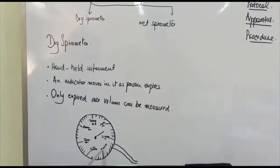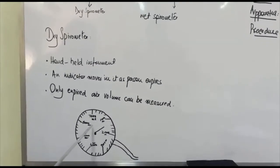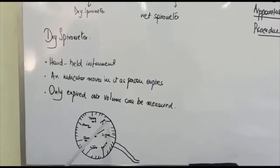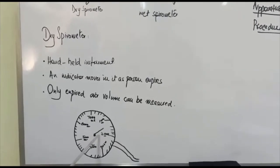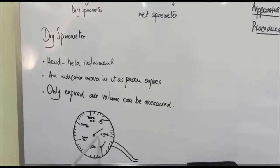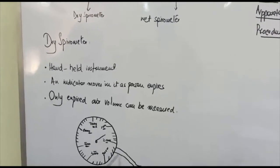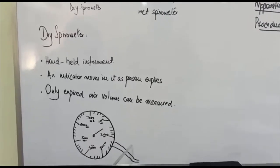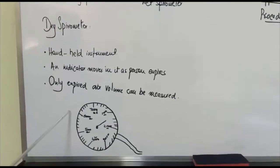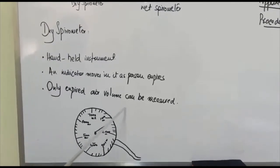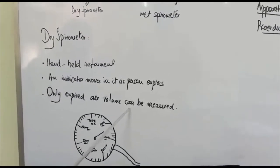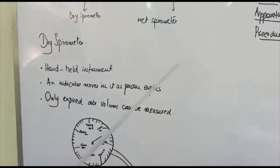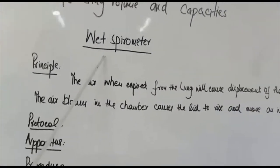The markings go from 1000, 2000, 3000, 4000, 5000, 6000 milliliters — up to 7 liters. An indicator is also present which moves when the person expires, and a rubber tube is attached to it. The disadvantage of the dry spirometer is that only expired air volume can be measured. So in practice, to determine lung functions, we use another instrument known as the wet spirometer.